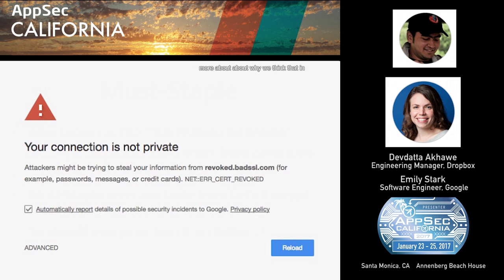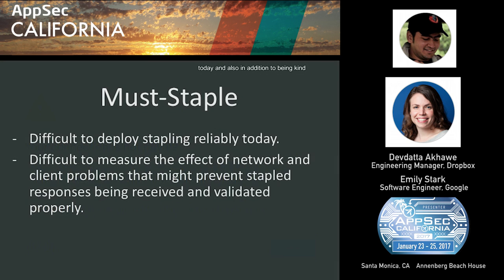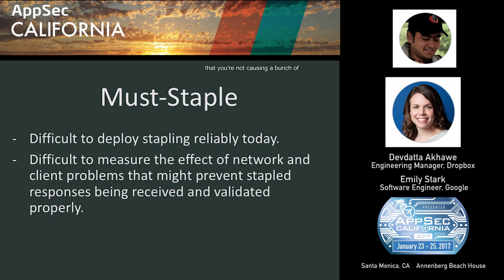We don't want to rush into Must-Staple because it's actually pretty hard to deploy OCSP stapling reliably today. In addition to being difficult to deploy properly, it's also difficult to know whether you've done it right. If you turn on OCSP stapling in your server, how do you know you're actually reliably delivering fresh, valid OCSP staples on every connection? How do you know you're not causing a bunch of errors? How do you know clients or networks are actually allowing those to be validated properly?